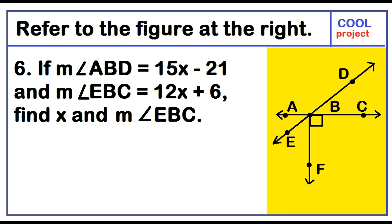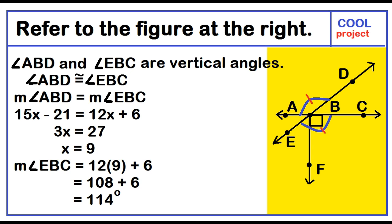If the measure of angle ABD equals 15x minus 21 and the measure of angle EBC equals 12x plus 6, find x and the measure of angle EBC. Angle ABD and angle EBC are vertical angles. Vertical angles are congruent, meaning the measure of angle ABD equals the measure of angle EBC. So, 15x minus 21 equals 12x plus 6, giving 3x equals 27, and x equals 9. The measure of angle EBC equals 12 times 9 plus 6, which equals 108 plus 6. Therefore, the measure of angle EBC is equal to 114 degrees.